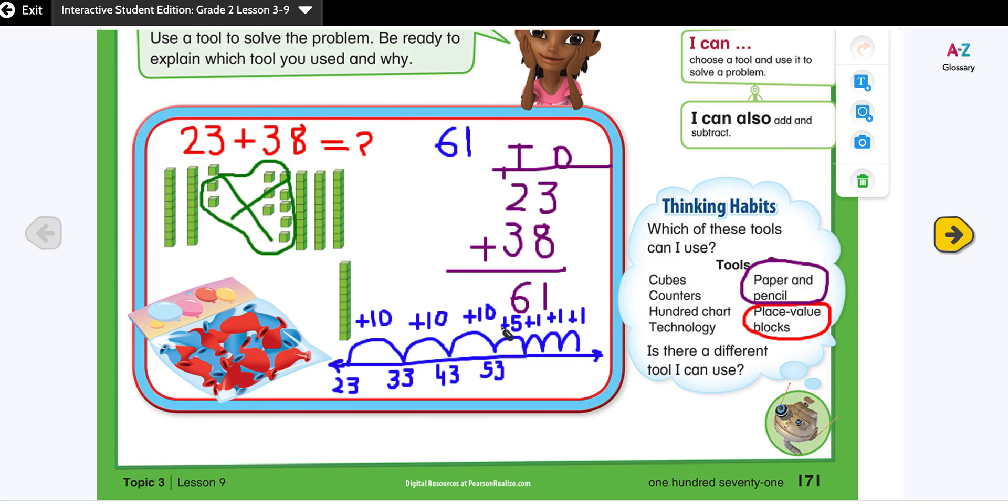53 plus 5 is 58. 58 plus 1 is 59. 59 plus 1 is 60, and 60 plus 1 is 61.